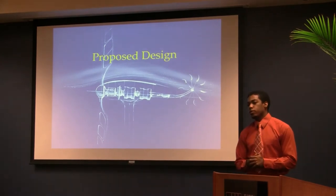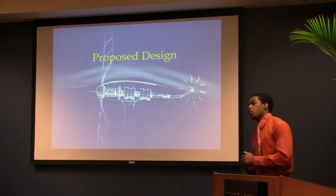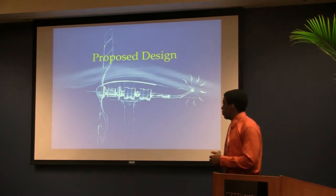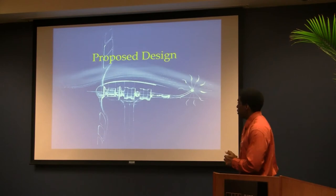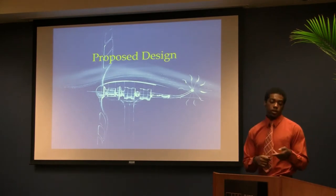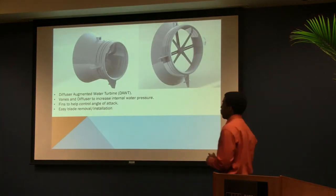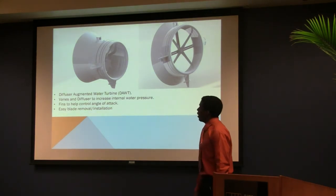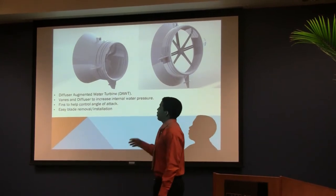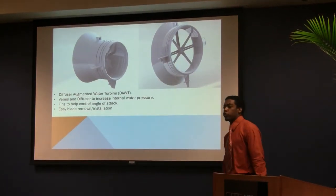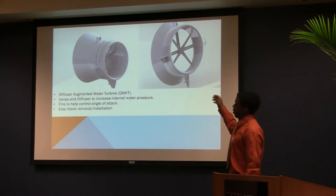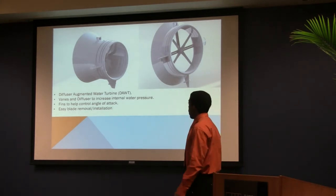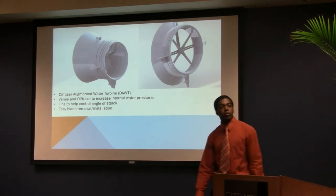In our design process we basically wanted to think about how we could make it more efficient and maximize power, and we came up with the idea of using a diffuser — what we call a diffuser augmented water turbine. Basically what this does is it creates a pressure drop across the turbine, which as a result induces greater flow through the turbine.